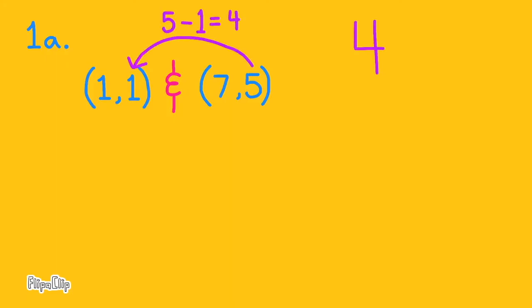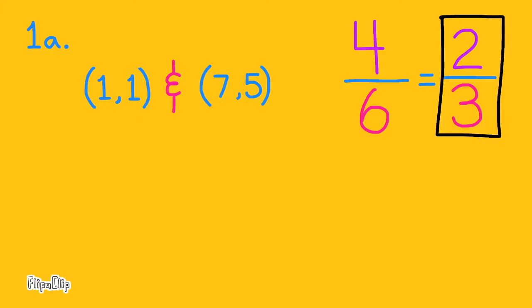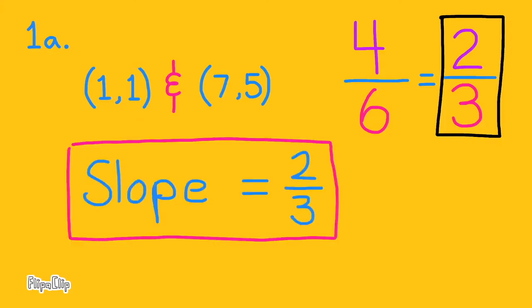You can find the slope without drawing the line on a graph. Just subtract the y values, 5 minus 1, and that's 4, and subtract the x values. 7 minus 1 is 6. So we have a slope of 4 over 6, which is simplified to a slope of 2 thirds.